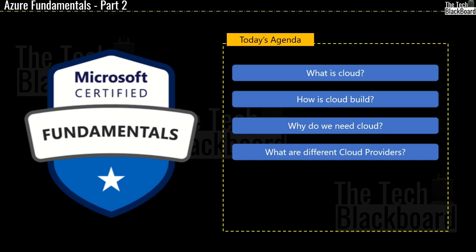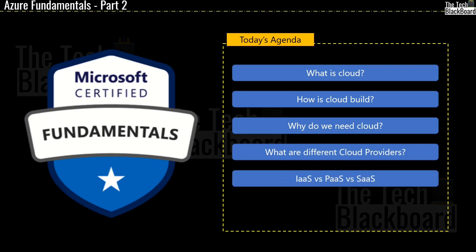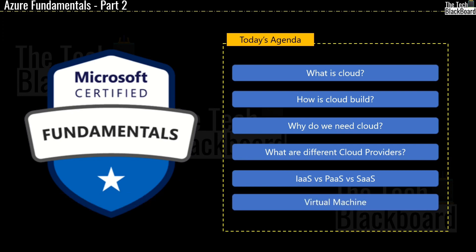Once we have understood the what, why, and how behind the cloud, we will take the next step of understanding the most commonly used cloud terms. In today's episode we are going to understand the very important concepts of IaaS (infrastructure as a service), PaaS (platform as a service), and SaaS (software as a service). We will understand what they are and the differences between them, and I will also explain what are virtual machines. If any concept is not clear you may re-watch the section — there will be a lot of repetition throughout the course.